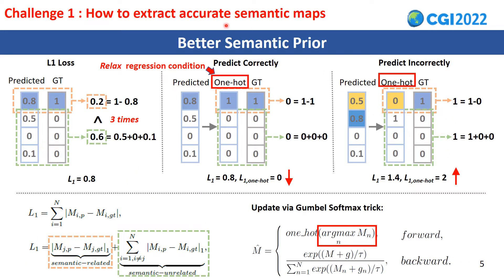Now, how to extract accurate semantic maps? Let's first analyze the formula of L1 loss. It regresses every dimension of the semantic label. We can further decompose it into two parts: the loss of the semantics-correlated dimension and the loss of semantics-uncorrelated dimensions.